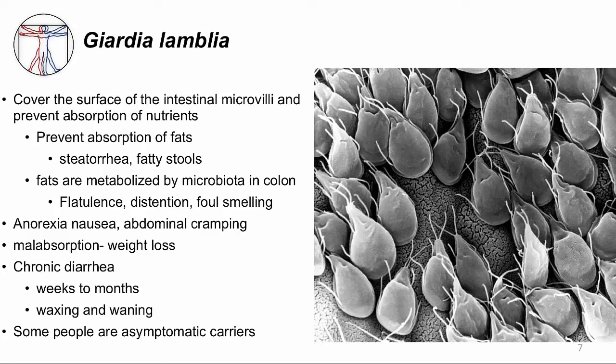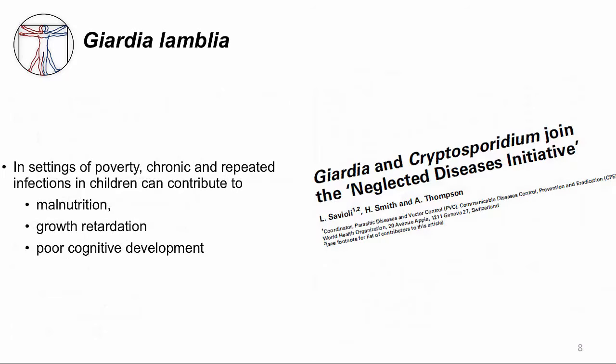Giardia can cause a chronic diarrhea lasting weeks to months, although the symptoms can wax and wane. In places where this is endemic, some people can actually be asymptomatic carriers. Please remember that Giardia is not just some uncomfortable, foul-smelling infection with no other complications. Giardia occurs quite often in developing countries and affects children disproportionately. Chronic and repeated Giardia infections can significantly contribute to malnutrition in these children, with the end result being growth retardation and poor cognitive development.